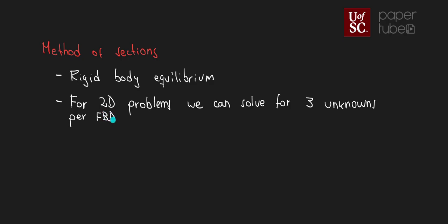If you look back at the method of joints, in that method we have particle equilibrium, and for particle equilibrium we can only solve for two unknowns for each of the free body diagrams that we do.